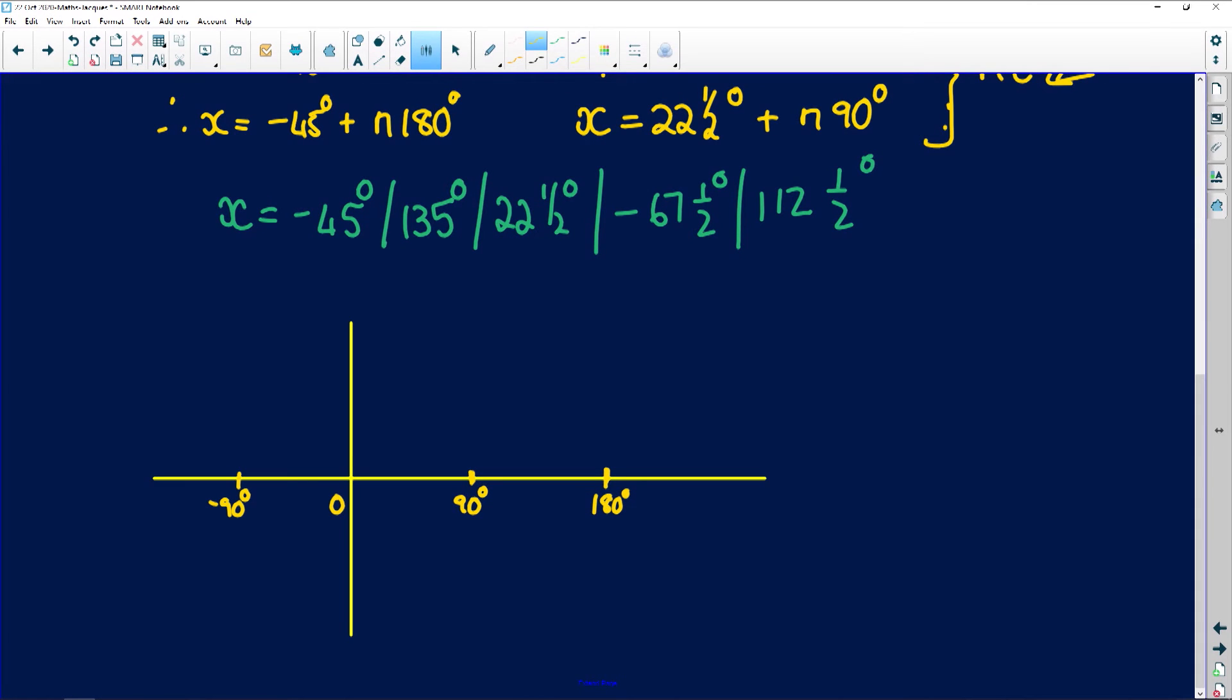Now, folks, remember if they restricted the domain, you don't sketch beyond the domain. You're going to lose marks for doing that. Let's see what this looks like. The sine of x, we all know, has a maximum at 1 and a minimum at minus 1. Now, I'm going to put those lines in as a dotted line.